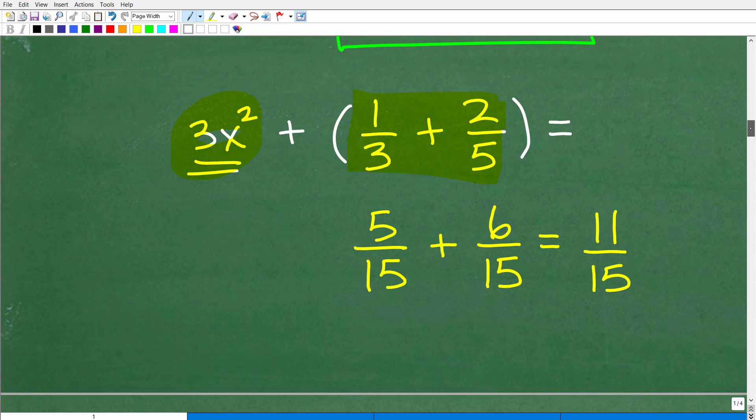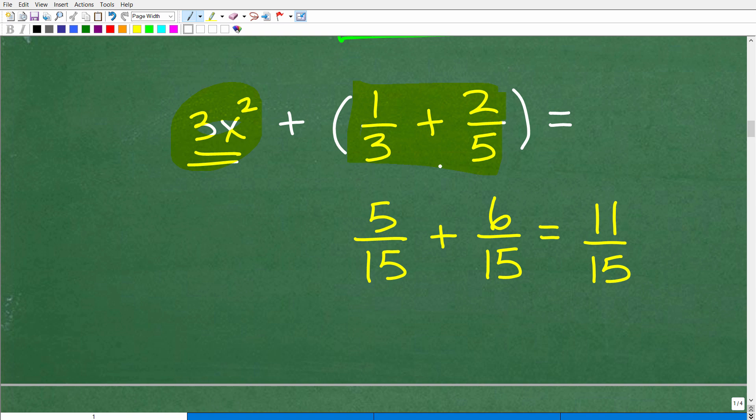But anyways, let's go ahead and take a look at 1 third plus 2 fifths. That's what we have to do now. We have to add those up. So 1 third plus 2 fifths, you can see that the LCD is 15. So we need to adjust the numerators. You can just see the work here.